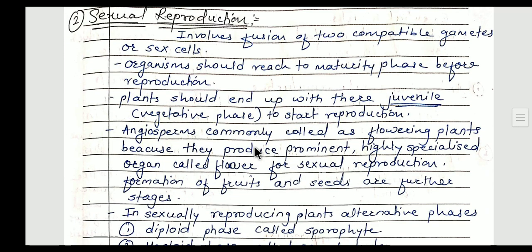An organism should reach maturity phase before reproduction. If the organism reaches maturity before growth is complete, the young one formed may not be genetically and morphologically identical to the parents, or that particular organism may suffer from deficiencies or diseases. That is why it is necessary that whenever any organism is going to reproduce, the organism should reach maturity after the growth phase, not before.